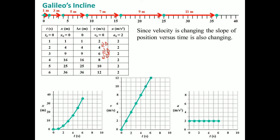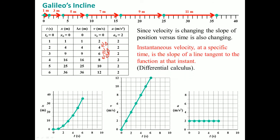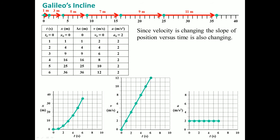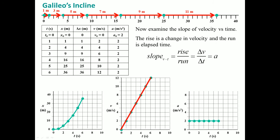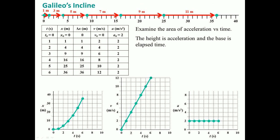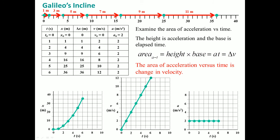Since velocity is the slope of position versus time and that slope is also changing, the instantaneous velocity at a specific time is the slope of a tangent line to the function at that instance. Likewise, the slope of the velocity versus time graph gives acceleration — the rise is the change in velocity and the run is the change in time. The area of the acceleration versus time graph is the change in velocity.